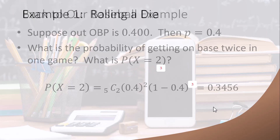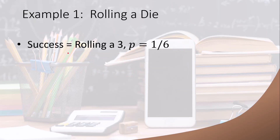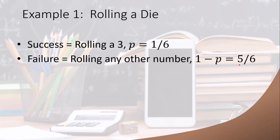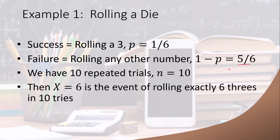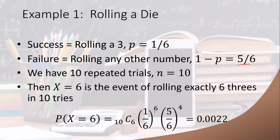Now let's work a die-rolling example. We define success as rolling a three, so the probability of success is 1/6, and the probability of failure is 5/6. Suppose we have 10 repeated trials. The event X equals 6 is rolling exactly six threes in ten tries. That is: (1/6) to the sixth power times (5/6) to the fourth power times 10 C 6, the number of ways it can happen. That equals 0.0022.